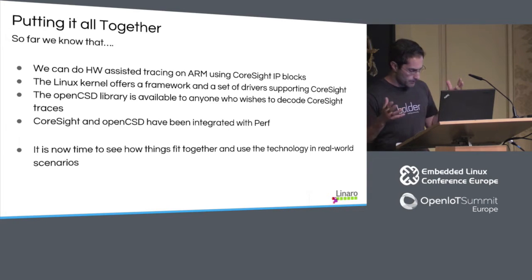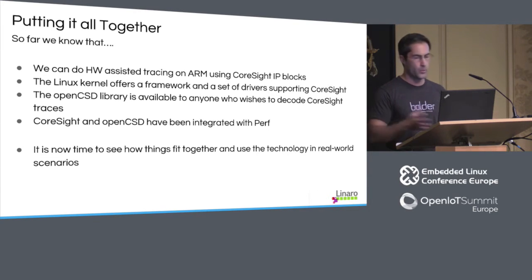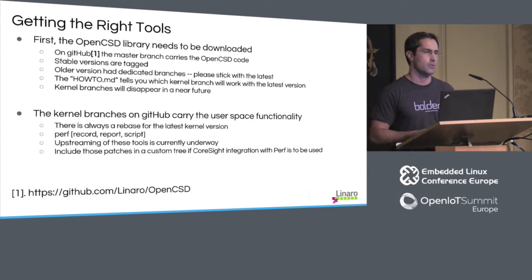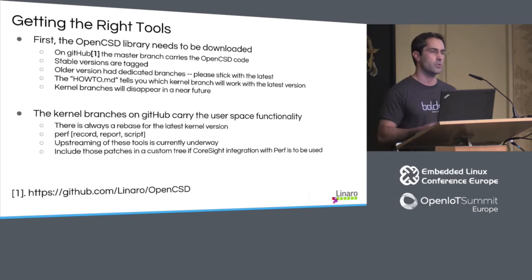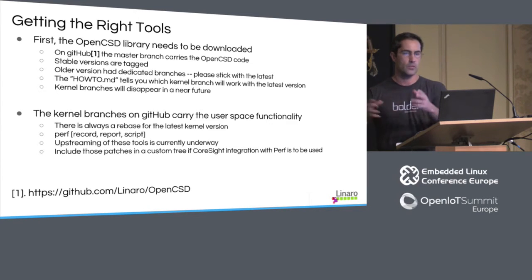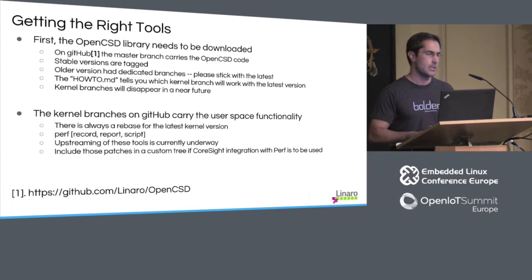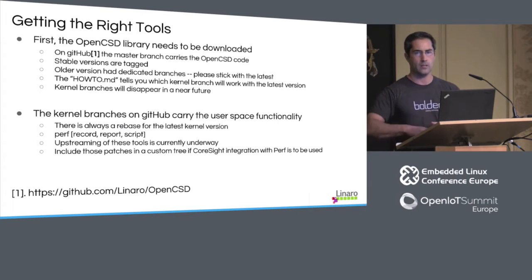Now that we have drivers, the framework, everything integrated with Perf, and the ability to decode traces — it's time to put everything together. The first thing is to get the library itself. Recompiling the Perf tools is mandatory only on the system that will decode the traces; on the target for acquisition, the Perf tools don't have to be recompiled. On the host where trace decompression will happen, get the OpenCSD library and stick to the master branch — this is where the latest code lives, and stable revisions are tagged the same way as the Linux kernel.